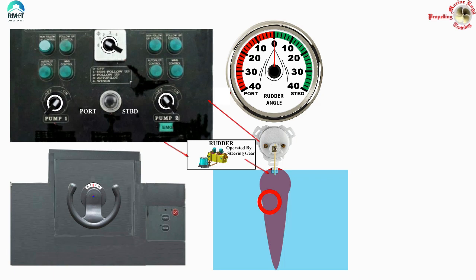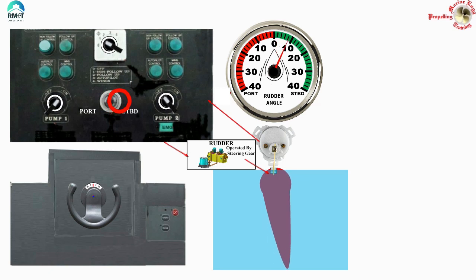If I pull the joystick to the starboard side, I am generating a signal to the rudder telling it to move to the starboard. Listen carefully - I am not telling it to what angle or how much. As long as I keep holding the joystick to the starboard side, the rudder will continuously keep going to starboard. The moment I release the joystick, the rudder will stop. Let me demonstrate: pull the joystick to starboard - see the rudder moves; leave the joystick - the rudder immediately stops.